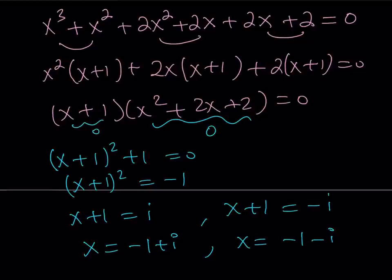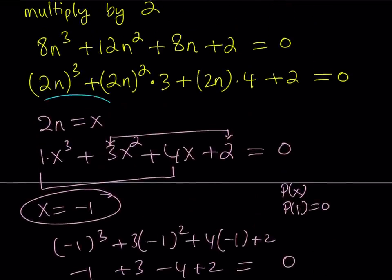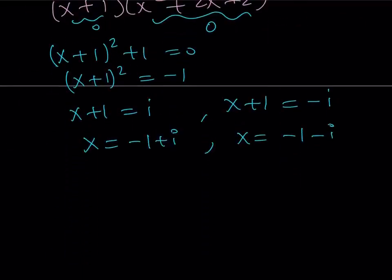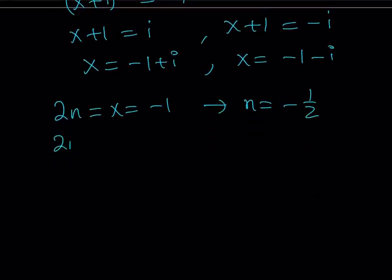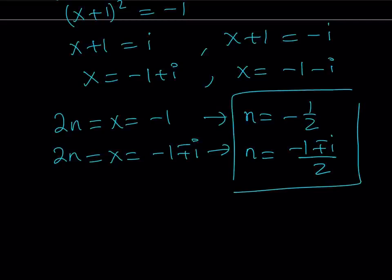This is not our end goal though. Our goal was to find the values of n, so we have to back-substitute. Remember, 2n = x. If 2n = x = -1, then n = -1/2. And if 2n = x = -1 ± i, then n = (-1 ± i)/2. So we get three solutions using our first method.